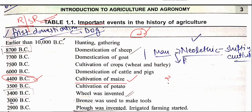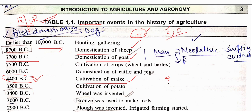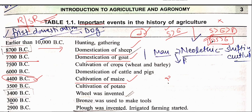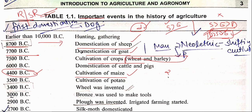Domestication of animals: if options include only sheep and goat, sheep was first; but if dog is also an option, dog was first domesticated, followed by sheep, then goat. The first crops cultivated were wheat and barley, and the first animal domesticated was sheep — year 7500 BC. Then followed cattle and pigs, cultivation of maize (4400 BC), cultivation of potato, invention of the wheel, and use of bronze to make tools.